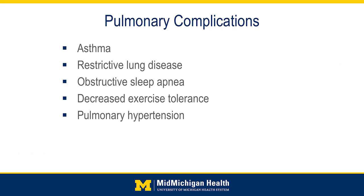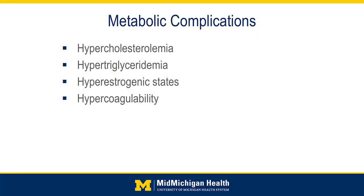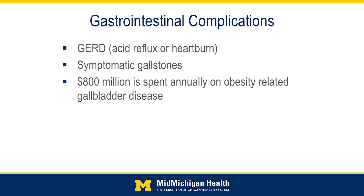There are higher rates of pulmonary hypertension — elevated blood pressure in the vessels going to the heart and lungs — which can be severe enough to require a heart or lung transplant. Metabolically, high cholesterol and high triglycerides are seen in patients with obesity. Higher levels of circulating estrogen can lead to polycystic ovarian syndrome, causing fertility issues. Hypercoagulability — a higher tendency to form blood clots — can occur because blood that doesn't circulate well pools in the leg veins and can form dangerous clots.